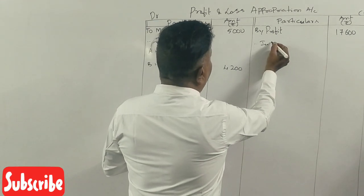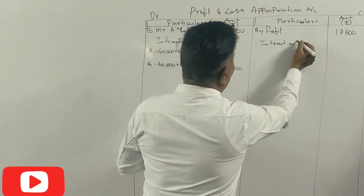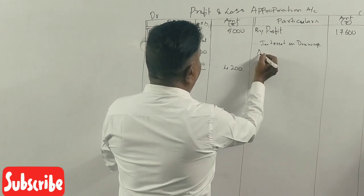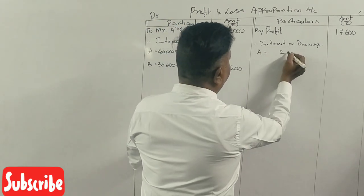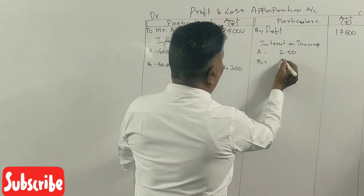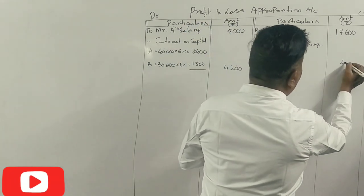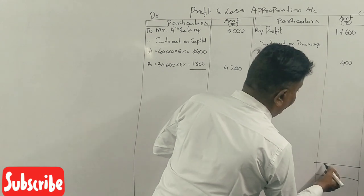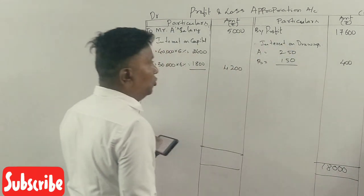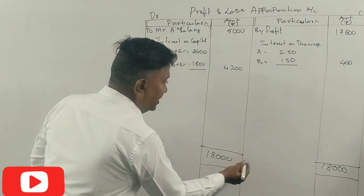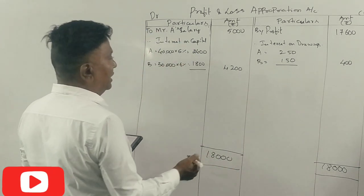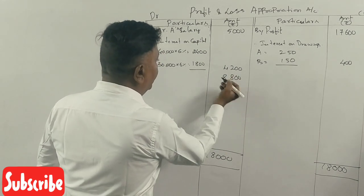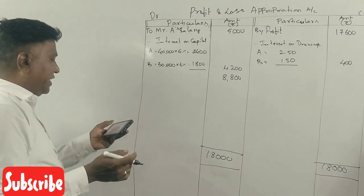Interest on drawing: A Rs. 250, B Rs. 150, total Rs. 400. Now check how much profit is left for the partners.